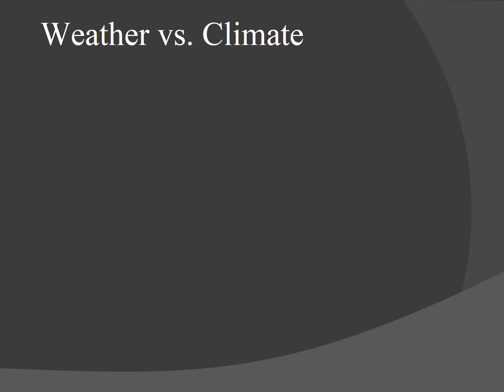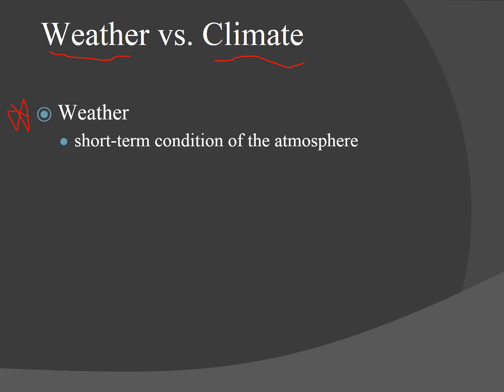So what is the difference between weather and climate? There is a difference. Weather is the short-term condition of the atmosphere — this could be days or weeks. Weather is read by meteorologists.